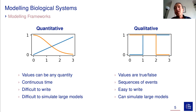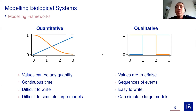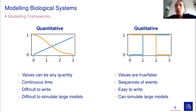The other framework, which is much simpler, is the qualitative one. Here we only have Boolean values — either true or false, one or zero. We also have no notion of time, just a sequence of events; we don't know if a transition lasts five minutes or two hours. The main advantage of this qualitative framework is that it's really easy to write — mainly Boolean logical formulas that are intuitive — and it can simulate very large models with many variables.